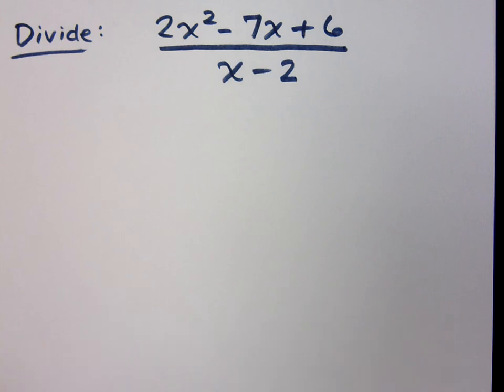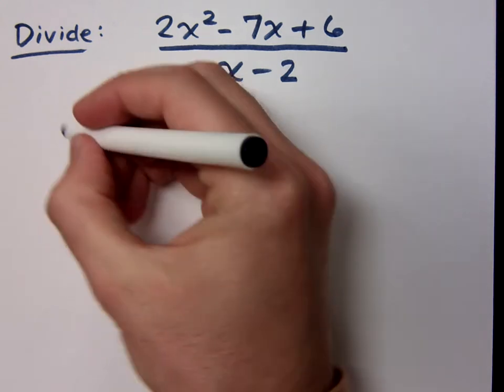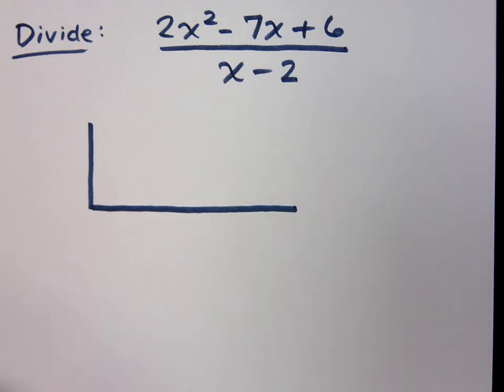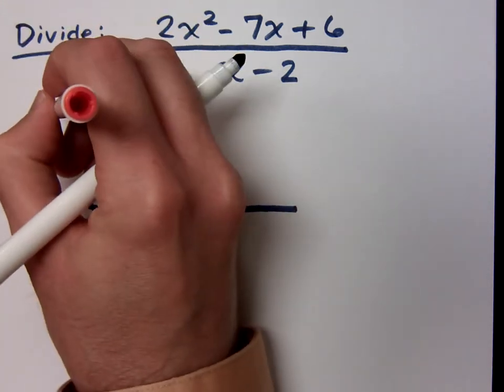If I do the synthetic division, I first need to identify my k. So when I set this up, we know what I'm going to have here. So I have my k.